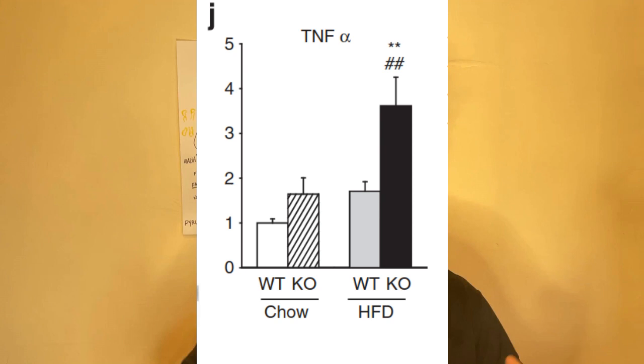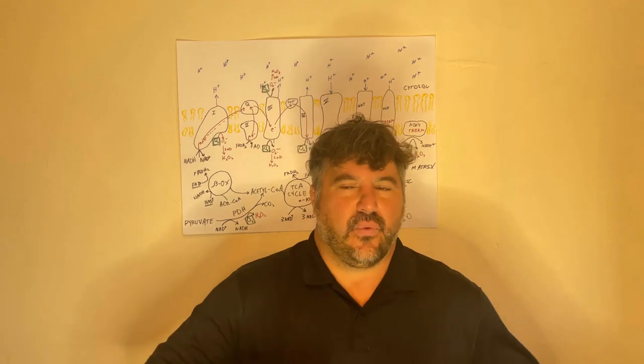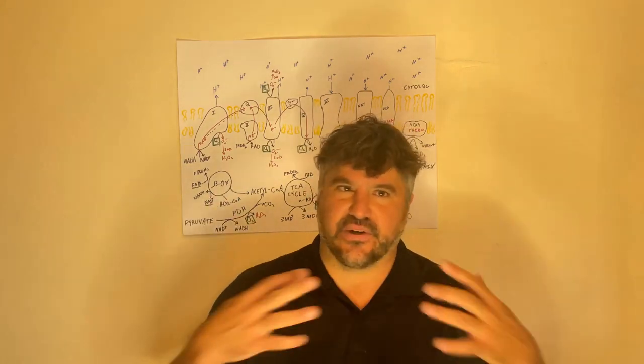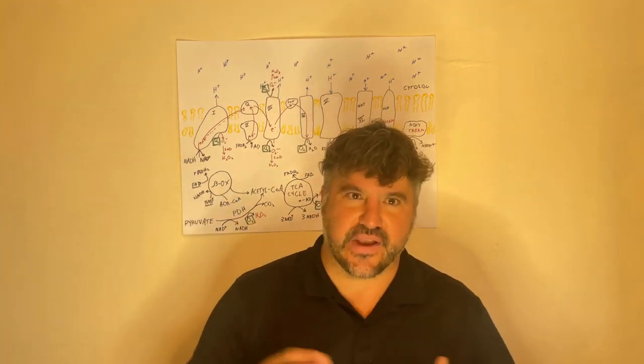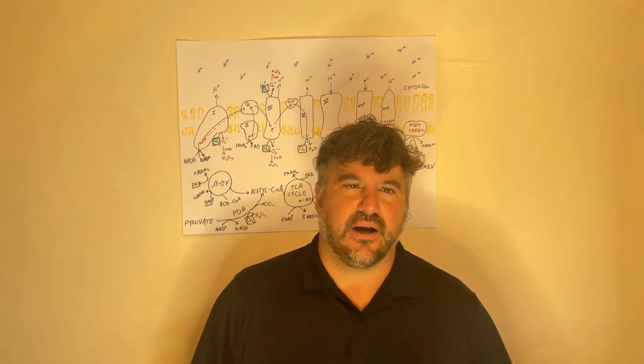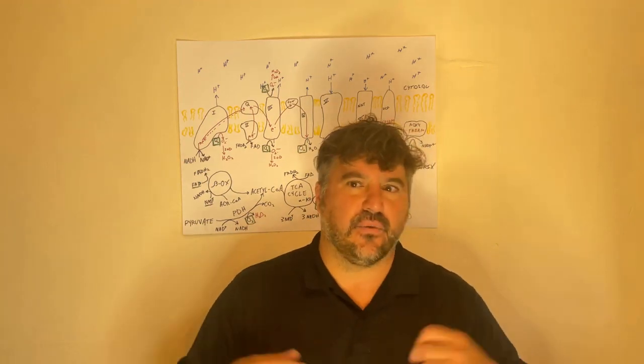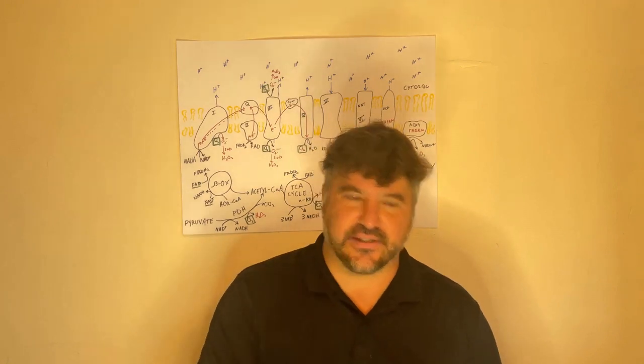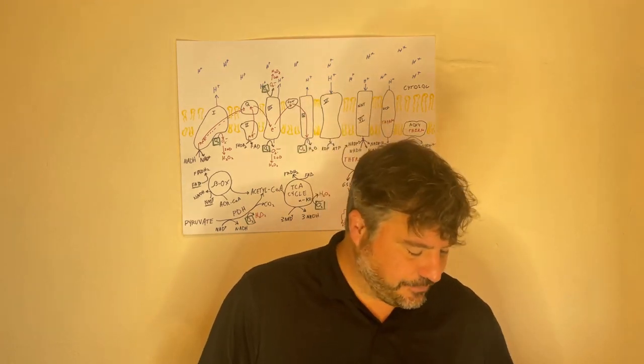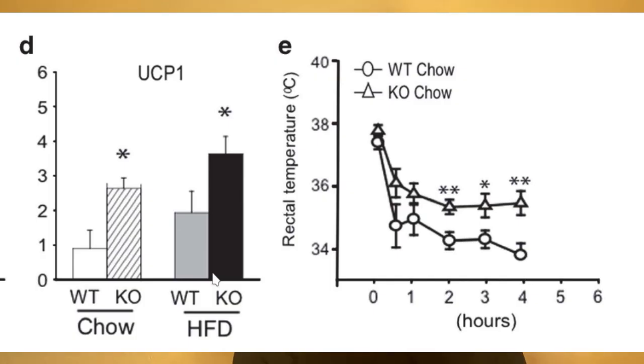So these mice are pretty bad off. They also have, and this is gonna be the subject of my next video, the mice also have a lot of inflammation. You can see that through high levels of a transcription factor called TNF alpha. So without that blow-off valve, these mice are getting reductive stress and they're getting inflammation. Check back in, we're gonna talk about exactly why that buildup of NADH causes inflammation.